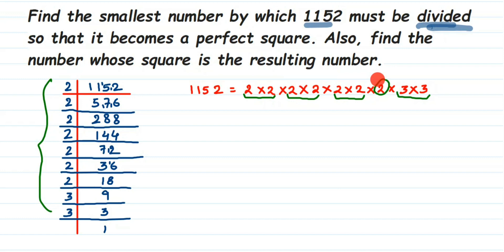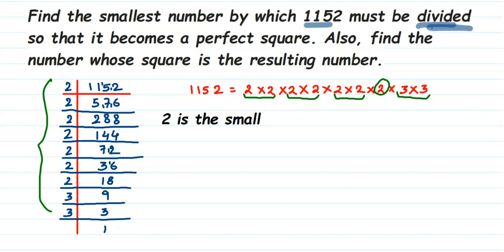The question is to find the smallest number by which 1152 should be divided. If I remove this extra 2, the factors will all be in proper pairs and the number becomes a perfect square. So the smallest number to be divided is 2. Therefore, 2 is the smallest number to be divided so that 1152 becomes a perfect square.